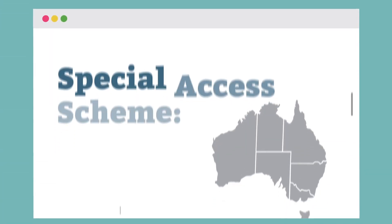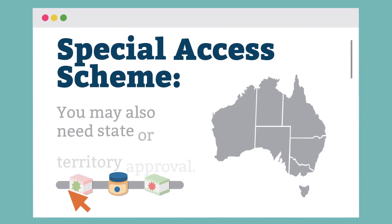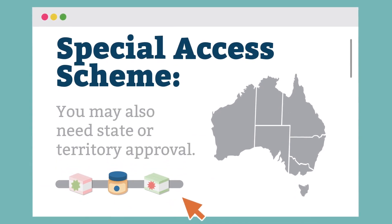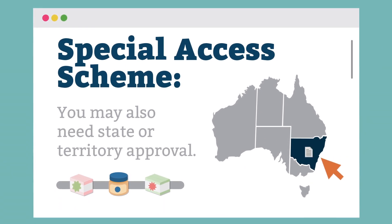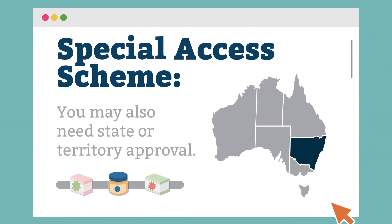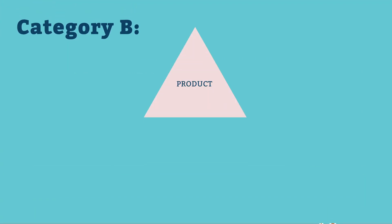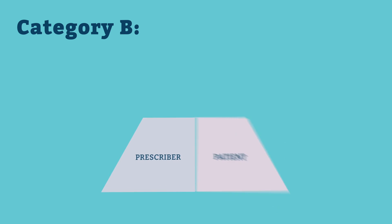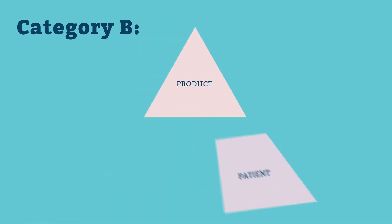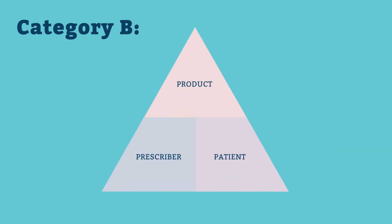Some medicinal cannabis products may also need state or territory approval. If you apply for SAS Category B approval through the online system, you can apply to the TGA and your state or territory health department at the same time. Be aware that SAS Category B approval is for a specific patient and prescriber, meaning you will have to apply for access for each patient. The SAS and Authorised Prescriber online system streamlines new applications with a cloning feature that lets you copy and edit previous applications.